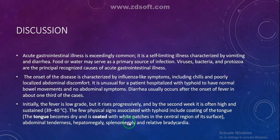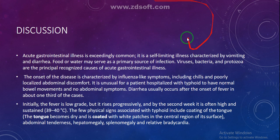In the discussion, acute gastrointestinal illness is exceedingly common and is a self-limiting illness characterized by vomiting and diarrhea. Food and water may serve as the primary source of infection, spreading organisms such as viruses, bacteria, and protozoa. Onset is characterized by influenza-like symptoms including chills and poorly localized abdominal discomfort. It is unusual for a typhoid patient to have normal bowel movements and no abdominal symptoms.